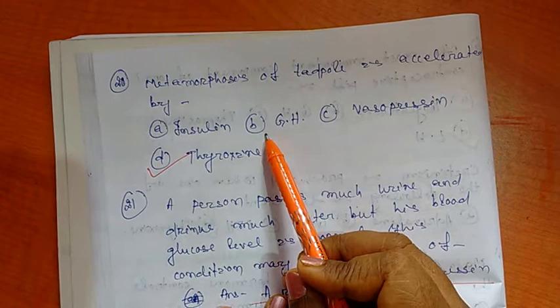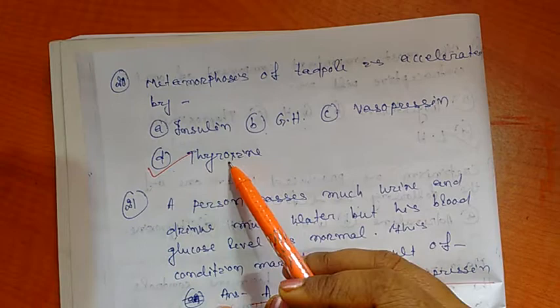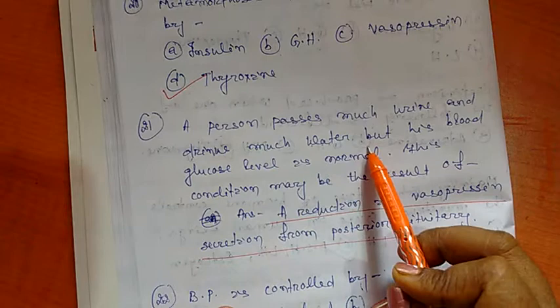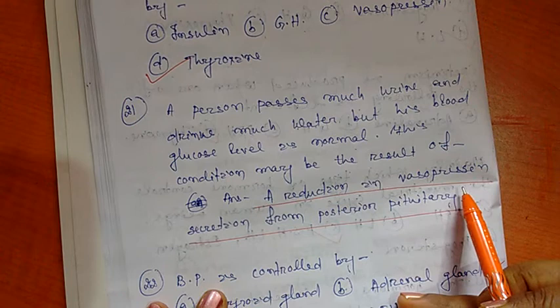Question number 21: A person passes much urine and drinks much water but his blood glucose level is normal. This condition may be the result of a reduction in vasopressin, that is antidiuretic hormone or ADH, which regulates the salt and water balance in our body. Vasopressin is secreted from posterior pituitary.